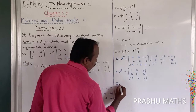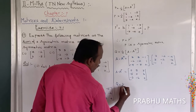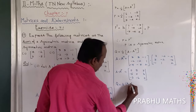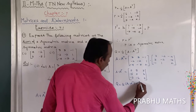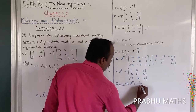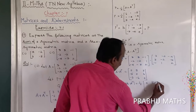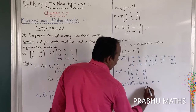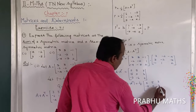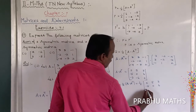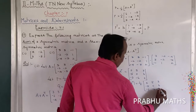Next, Q equals 1 by 2 into A minus A transpose. That equals 1 by 2 into the matrix: first row 0, 5, 3; second row minus 5, 0, 6; third row minus 3, minus 6, 0.